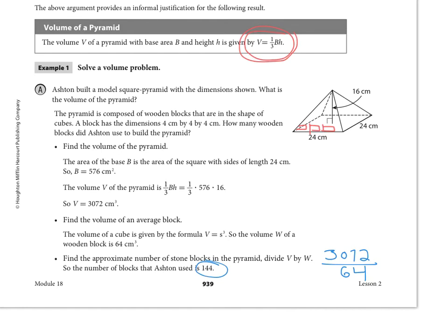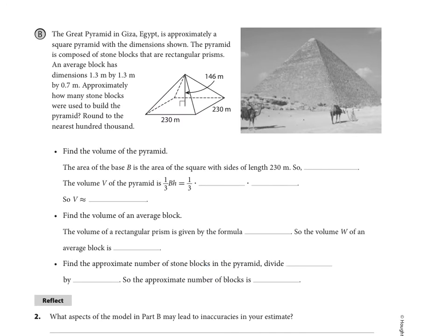So we're going to do something similar to this in part B on the next page. This is page 940. Now we are talking about the Giza pyramids here, and these are approximate dimensions here. 230 meters square is the base, and the pyramid is composed of stone blocks that are rectangular prisms.